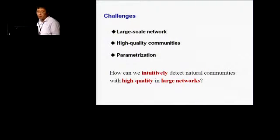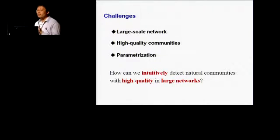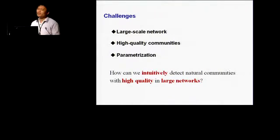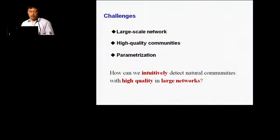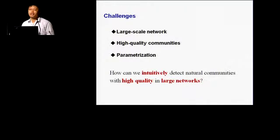Another challenge is parameter setting. For many algorithms, they need to specify the number of communities. However, if we have no knowledge about the network, it's very difficult to specify. So in light of these problems, the question is: how can we intuitively detect natural communities with high quality in large-scale networks?